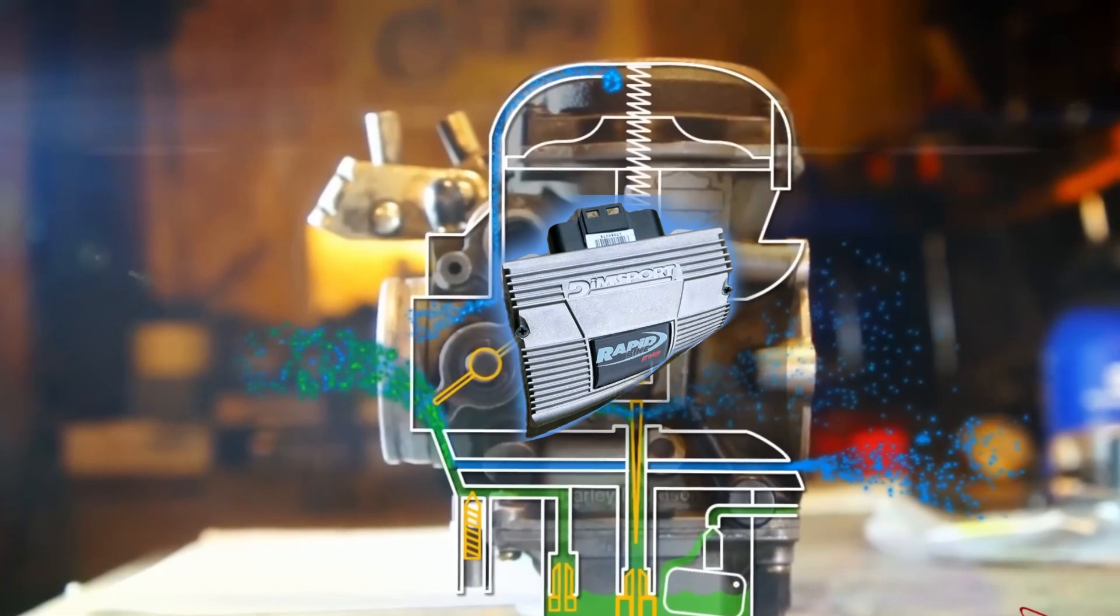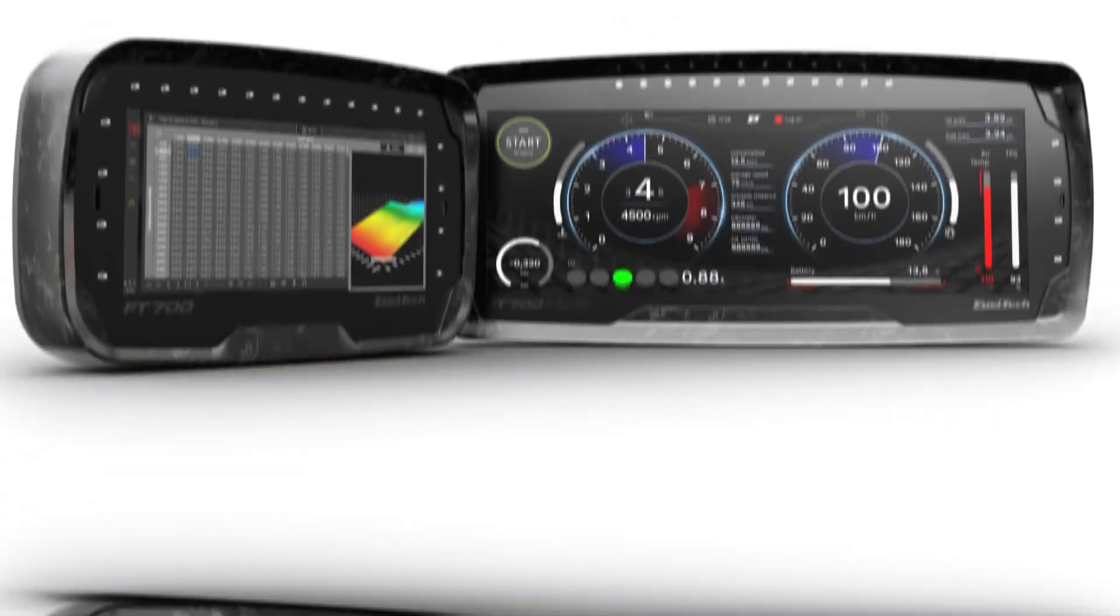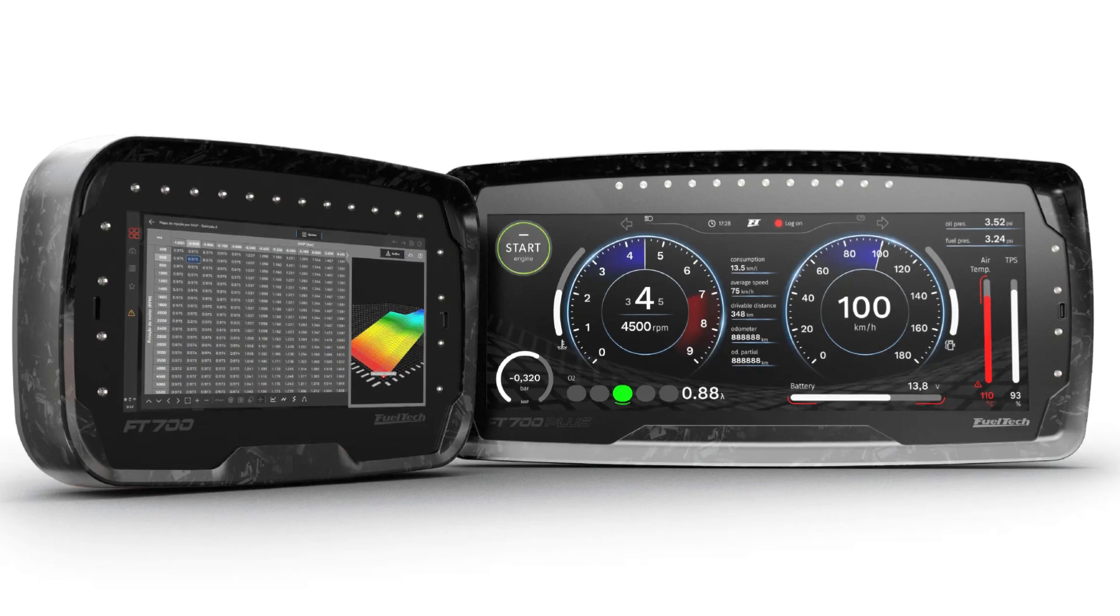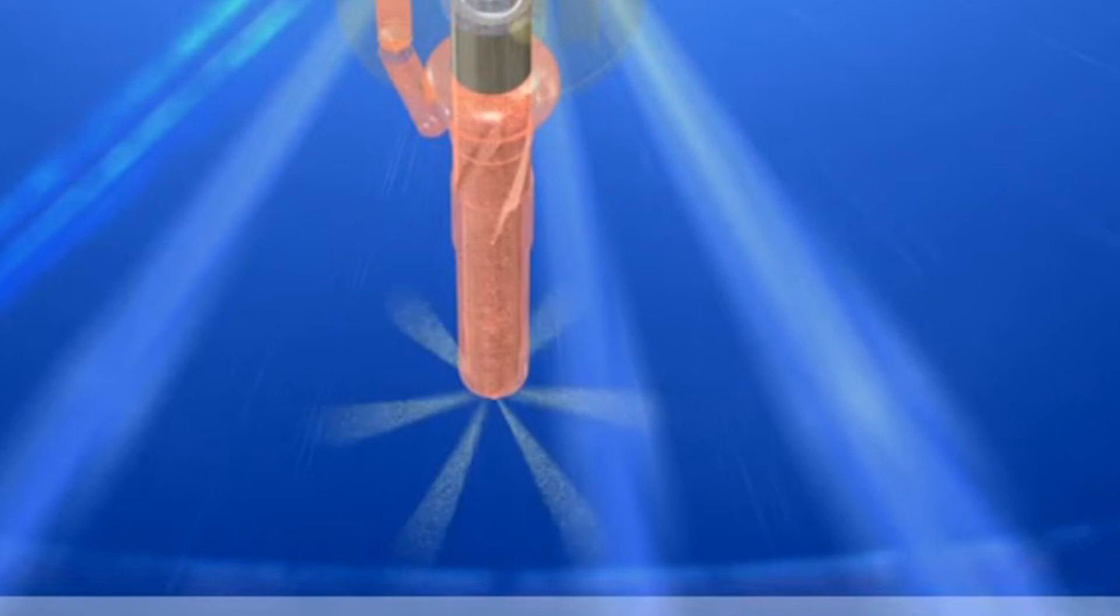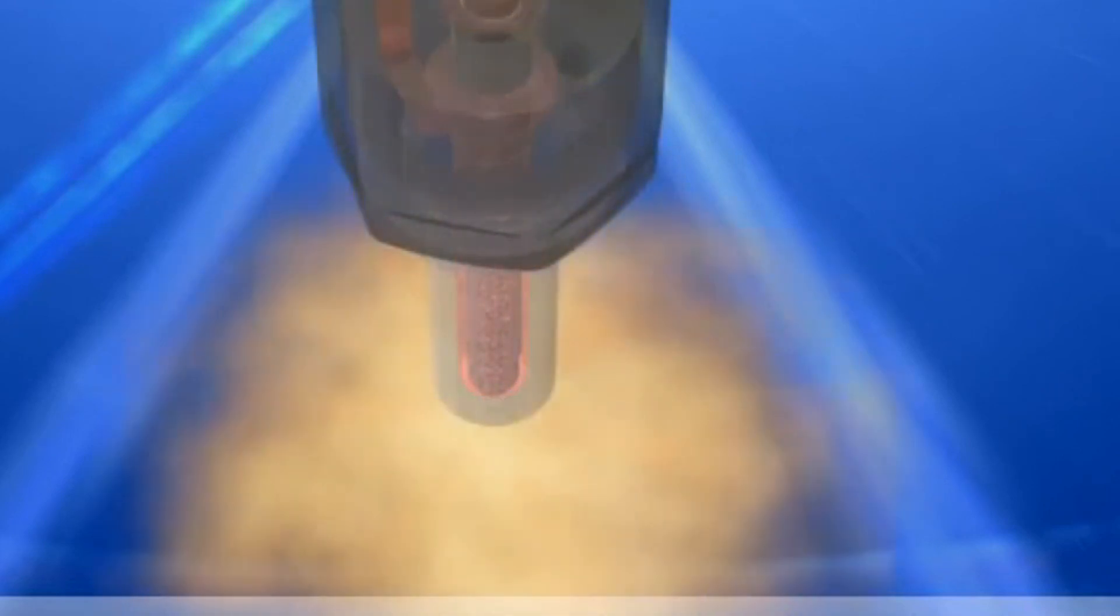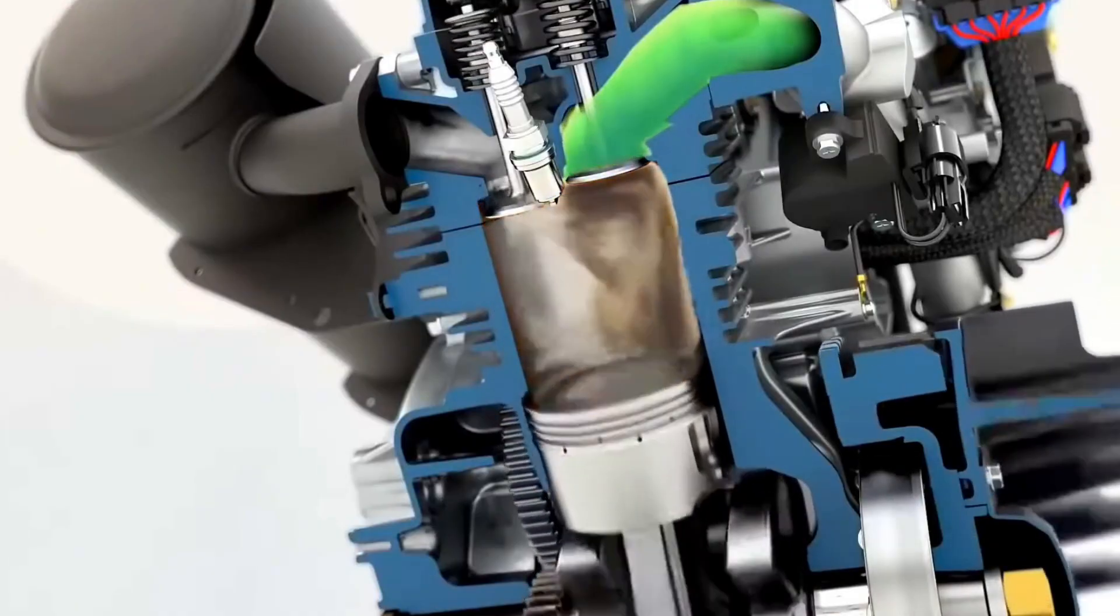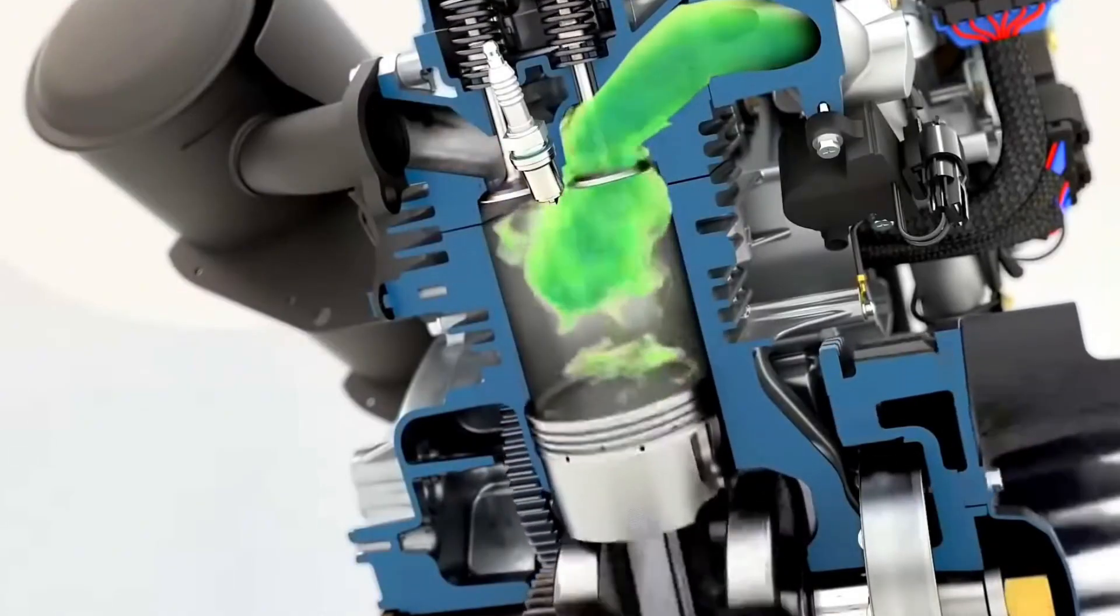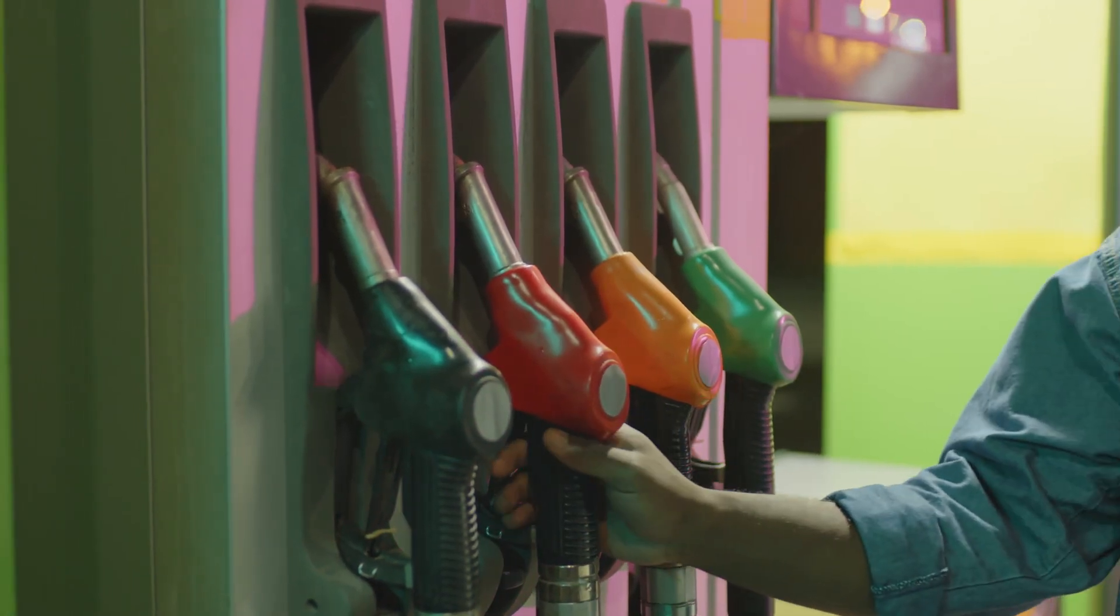All that info goes to the ECU, basically the engine's brain, which calculates exactly how much fuel is needed and when to spray it. The fuel injector then delivers a fine mist directly into the intake port, or even right into the cylinder, depending on the system. It results in smoother starts, better throttle response, more power when you need it, and superior fuel economy.